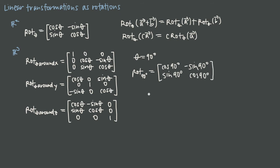To get these values, we can use the unit circle or a calculator. Cosine of 90 degrees is 0, and sine of 90 degrees is 1, giving us negative 1 in the top-right entry. Sine of 90 degrees gives 1 in the bottom-left, and cosine of 90 degrees gives 0. So our transformation matrix is [0, -1; 1, 0], which rotates every vector in R2 90 degrees counterclockwise around the origin.